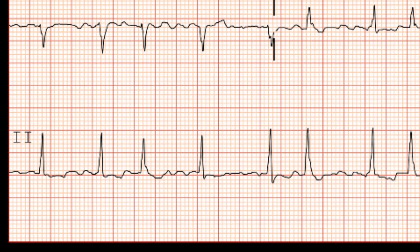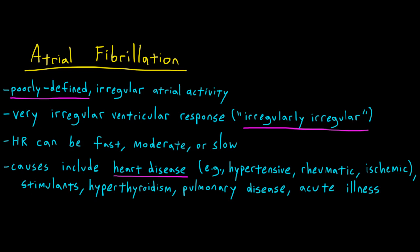This is an example of an EKG of a patient with atrial fibrillation. Atrial fibrillation is characterized by poorly defined irregular atrial activity and a very irregular ventricular response. We sometimes call it irregularly irregular. The heart rate can be fast, moderate, or slow. And there's a number of things that can predispose patients to developing AFib. Because the focus of this video is to go over a basic method of reading EKGs, we'll go in more detail about AFib and other arrhythmias later.